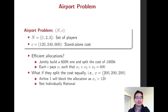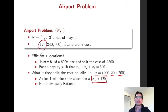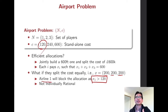We can consider a very naive cost allocation — for instance, they split the cost equally. But this is not good, because Airline 1 will block this allocation. Airline 1 can build its own runway and it just costs 120, so Airline 1 has no incentive to participate in this coalition. This is not individually rational, so this allocation is not fair.